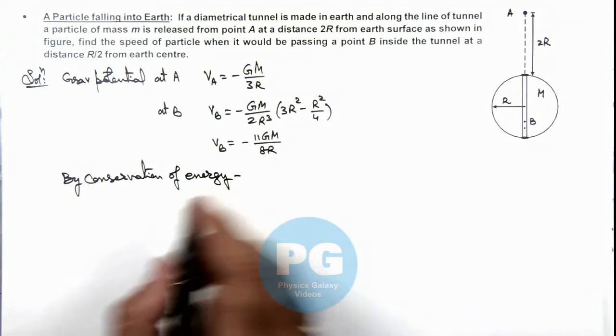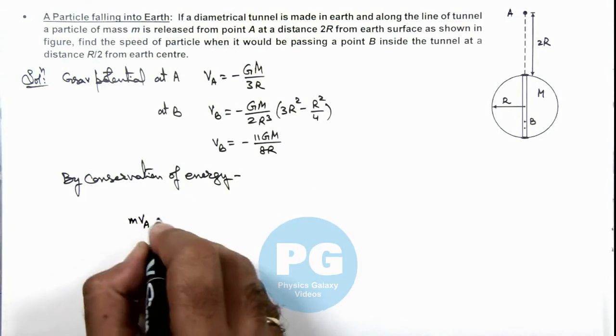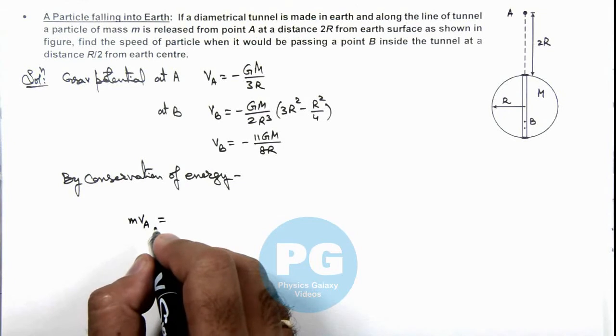We can write down at point A, the energy of body would be mV_A. This must be equal to, as at point A the kinetic energy was zero as it was released from rest.